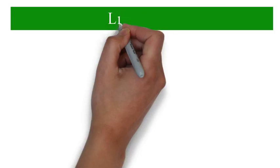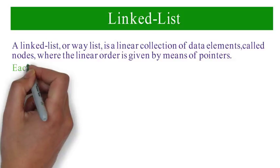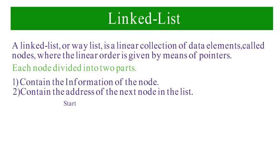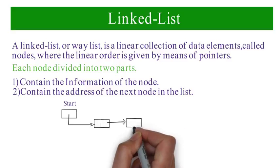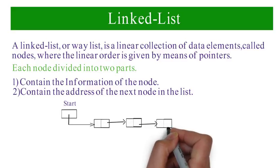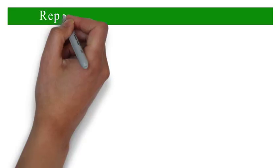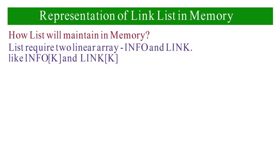What is a linked list? A linked list, or one-way list, is a linear collection of data elements called nodes where the linear order is given by means of pointers. Each node is divided into two parts: the first part contains the information of the element, and the second part, called the link field or next pointer field, contains the address of the next node in the list.